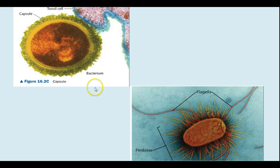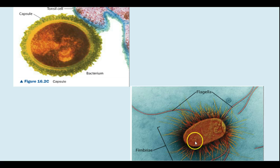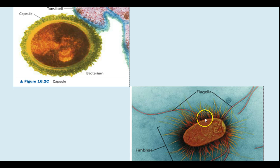Here we see a bacterium attaching to a tonsil cell, where the capsule allows it to stick and attach to that cell. We also have the fimbriae and the flagella shown here — the fimbriae are a little bit longer than the pili but much shorter than the flagella, and they're not equipped for movement the way the flagella are.